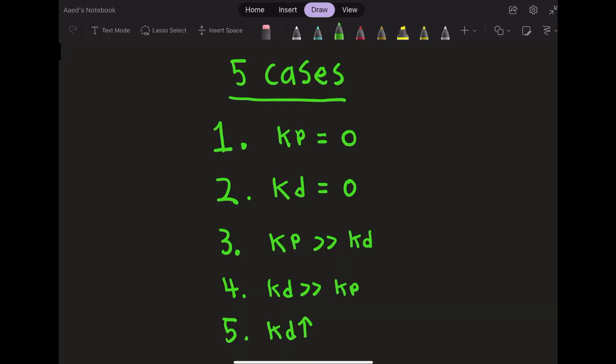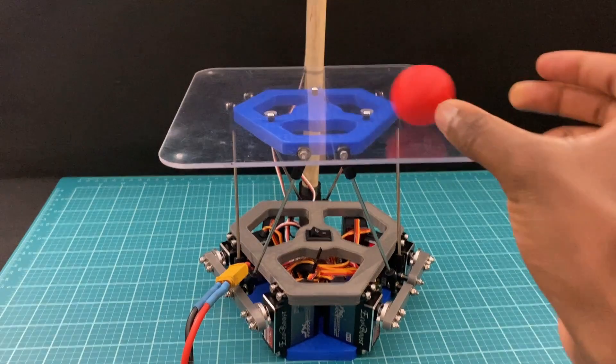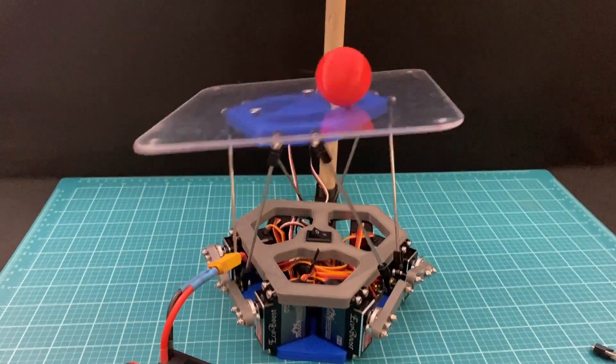The last case occurs when both kd and kp are too high. This scales both the proportional and the derivative terms, and has the effect of making the output vector too high. A similar effect occurs where the ball never reaches equilibrium, and it circles around the board.